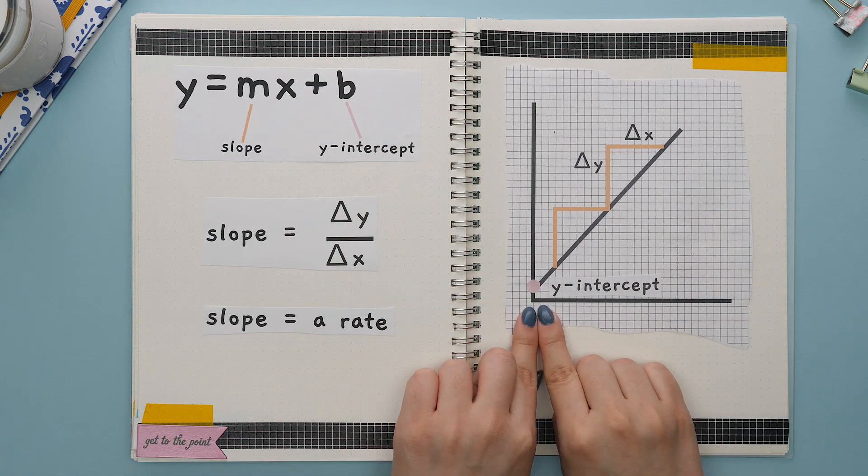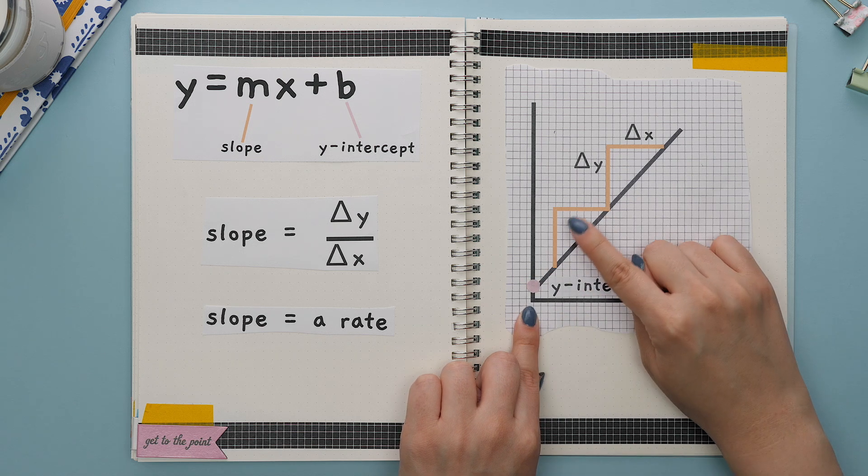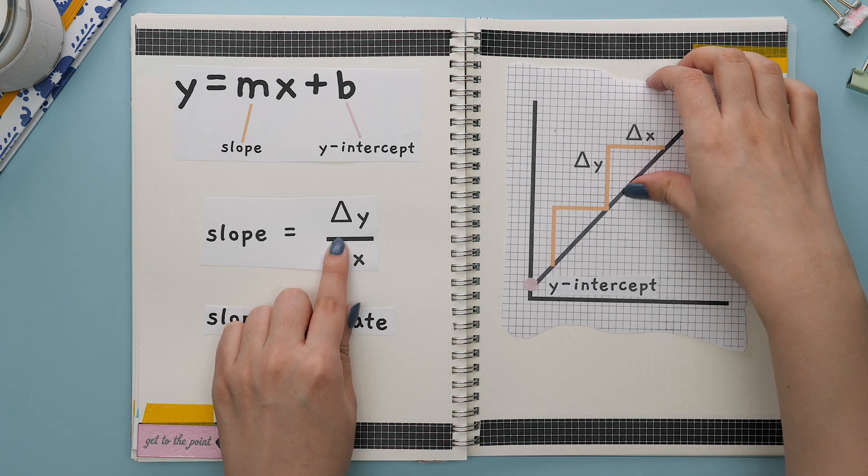The y-intercept is a point found on the y-axis. The slope is the change of y over the change of x. Think of this as a rate.